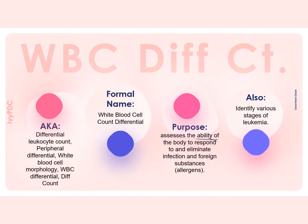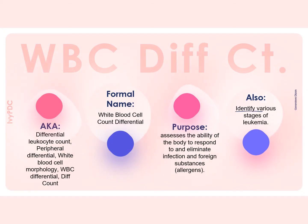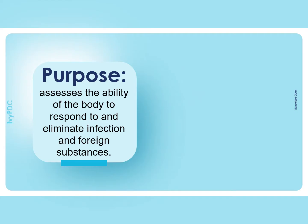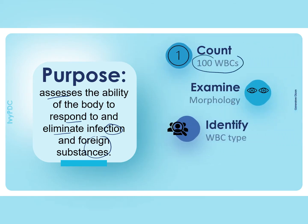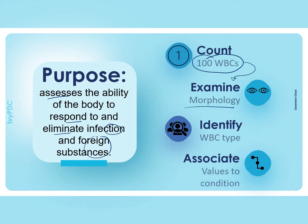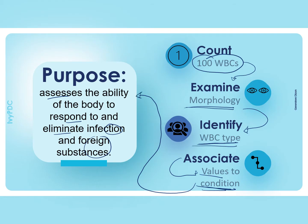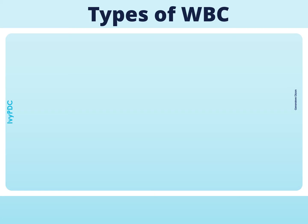The purpose of performing a WBC diff count is to assess the ability of the body to respond to and eliminate any infection or foreign substances that might have entered the body, such as allergens. The WBC diff count may also identify different stages of leukemia. In differential counting, we count at least 100 white blood cells and examine the morphology of each cell to identify which type they belong to. We then associate these values to certain conditions to assess the body's ability to react to infection and foreign substances.